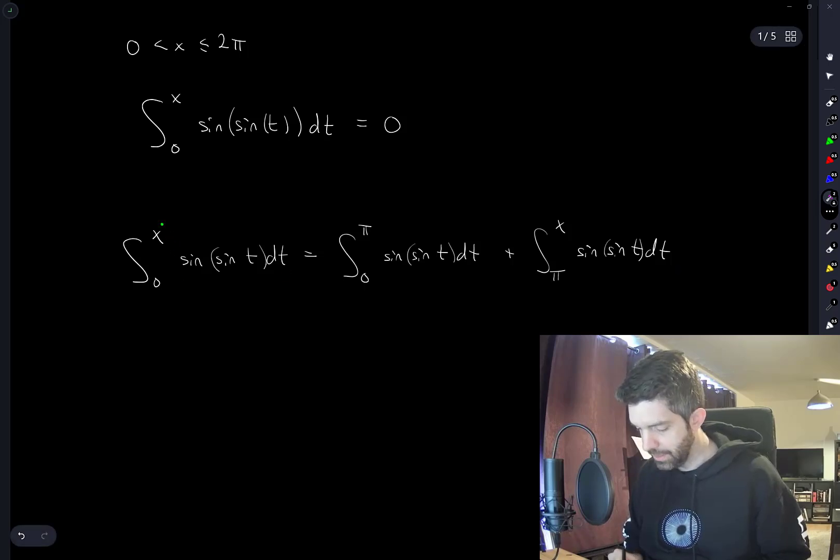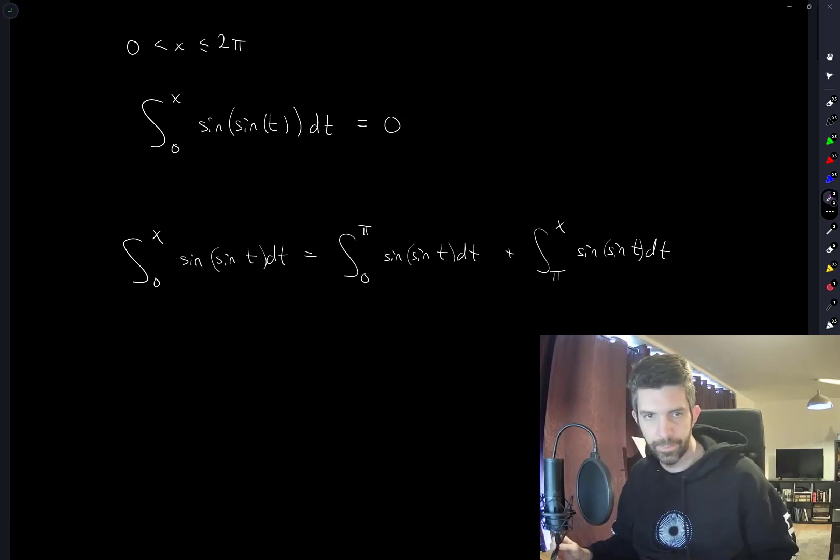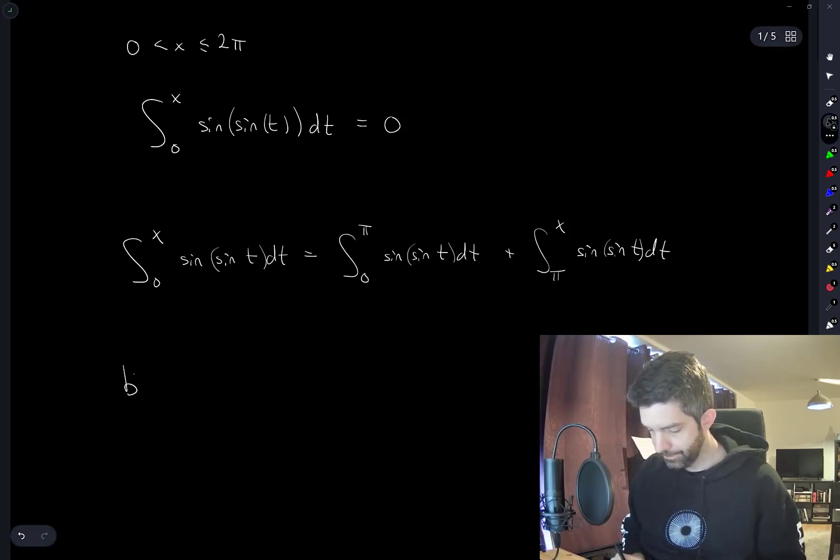And if I have a value of x less than pi in here, then the integrand is positive. And so the integral can't be 0. So I think the answer is just going to be B, one solution.